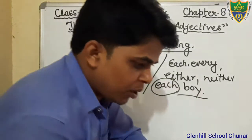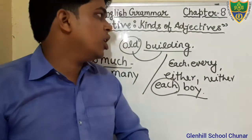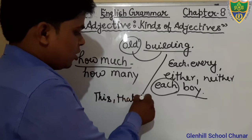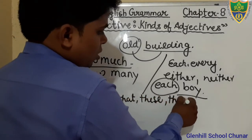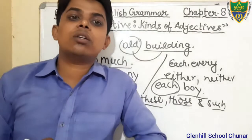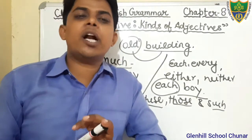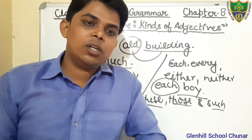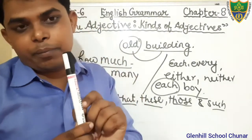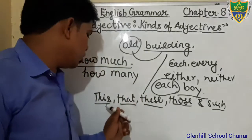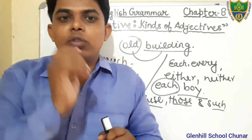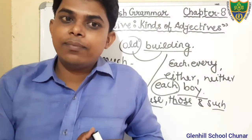After that, we have read Demonstrative Adjective. The words this, that, these, those, and such are known as Demonstrative Adjectives when used with a noun. For example, 'This pin is blank.' We use this, that, these, those, and such to show, indicate, or point out an object. Therefore, they are known as Demonstrative Adjectives.